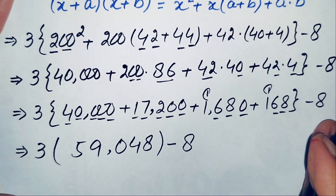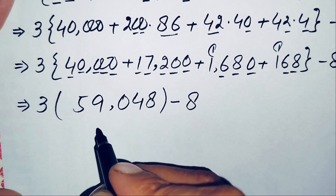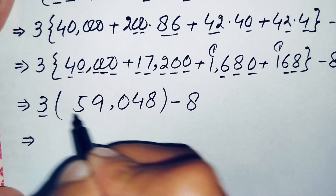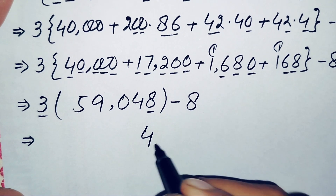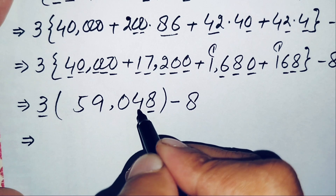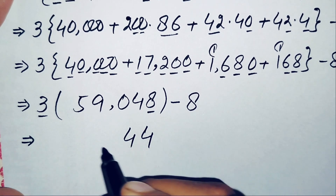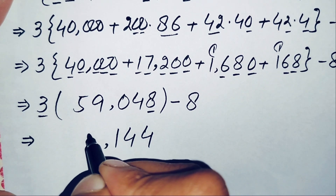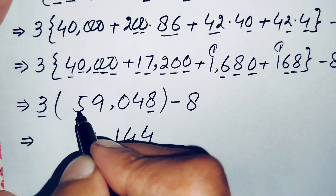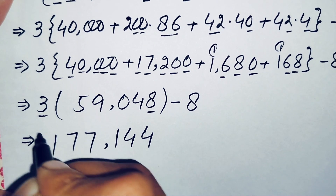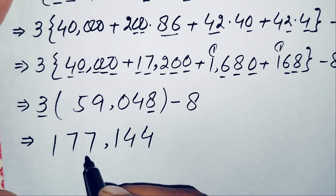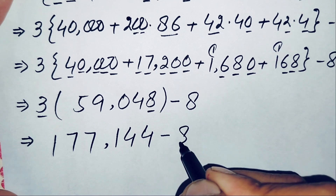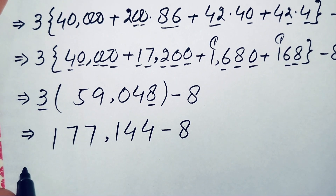Now we will multiply 3 × 59,048 without a calculator. Starting from the ones position: 3×8=24, write 4 carry 2; 3×4=12+2=14, write 4 carry 1; 3×0=0+1=1; 3×9=27, write 7 carry 2; 3×5=15+2=17. The product gives 177,144. So we have 177,144 minus 8.